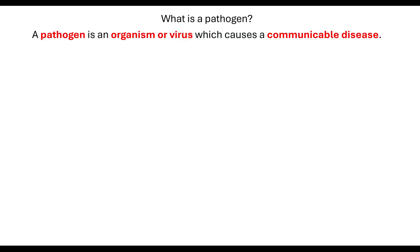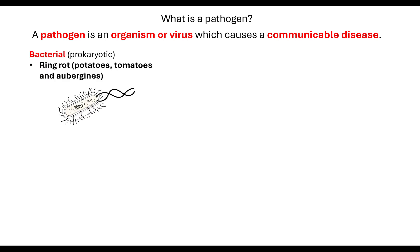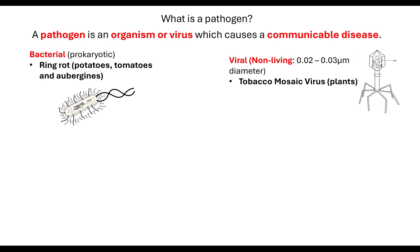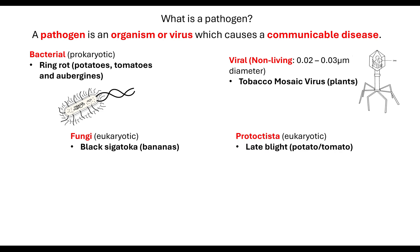Let's remind ourselves about pathogens. A pathogen is an organism or virus which causes a communicable disease. Specific examples you need to know: a bacterial pathogen causes ring rot disease in potatoes, tomatoes, and aubergines. The viral pathogen is tobacco mosaic virus (TMV), which can be found in plants other than just tobacco. A fungal pathogen causes black sigatoka in bananas, and the protist causes late blight in potato and tomato plants.